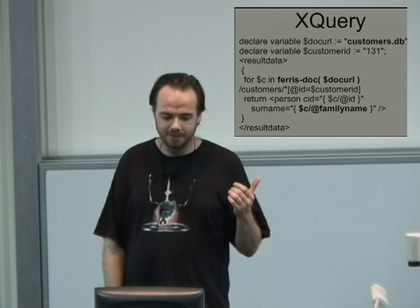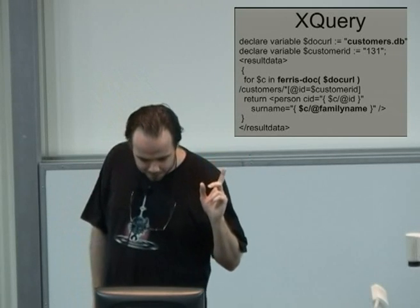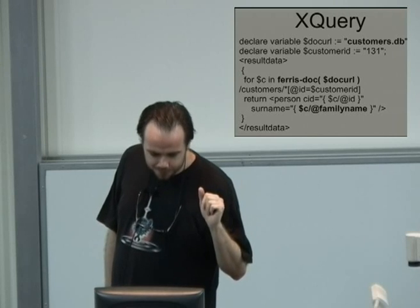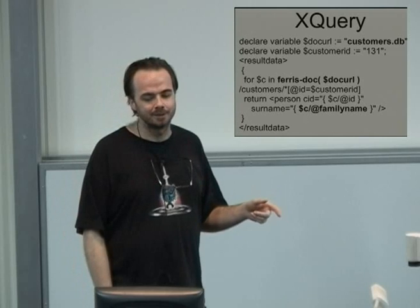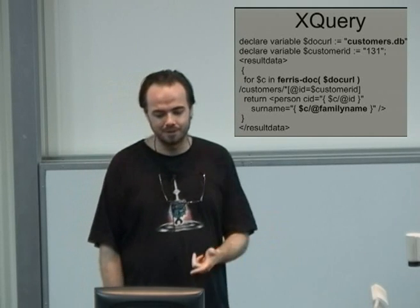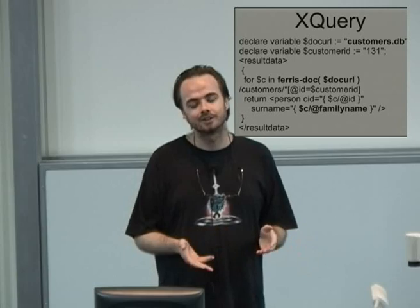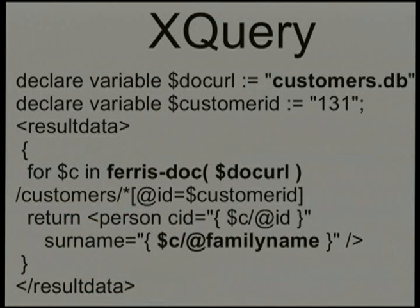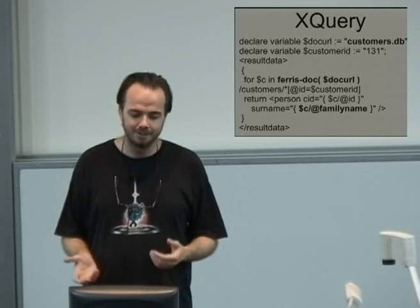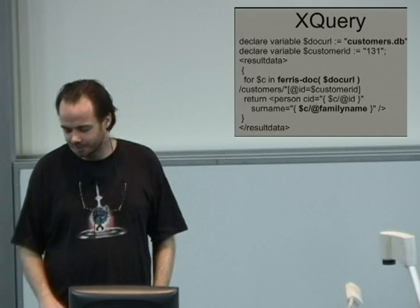Getting at LibFerris file systems through XQuery: the parts in bold are slightly modified from XQuery that would run natively on XML. Instead of running on XML, you run on a .db Berkeley DB4 file, and instead of using the standard doc function, you use ferris-doc. Ferris-doc will take any URL that LibFerris could mount as a file system and give that back as something XQuery can evaluate. If customers.xml had a million customers and you were looking up someone by family name, that's going to be incredibly slow if the XML file is huge — but if it's a Berkeley DB4 file, it's going to be a single seek if it's a hash.